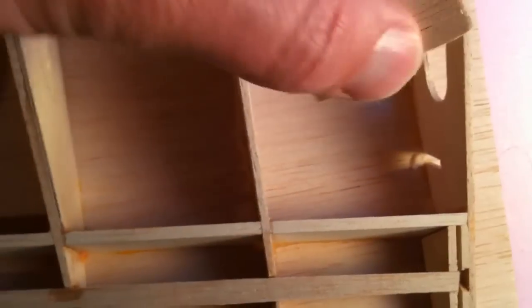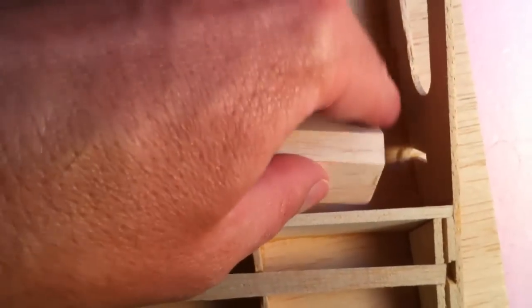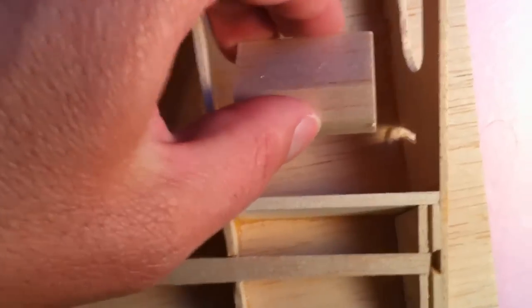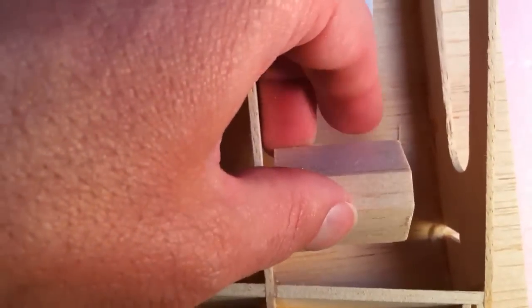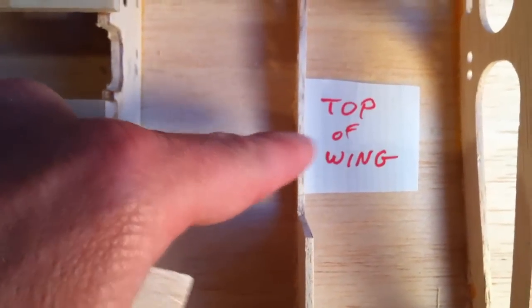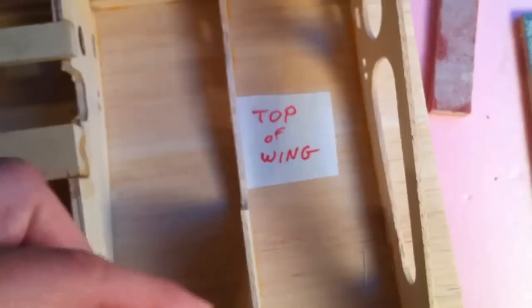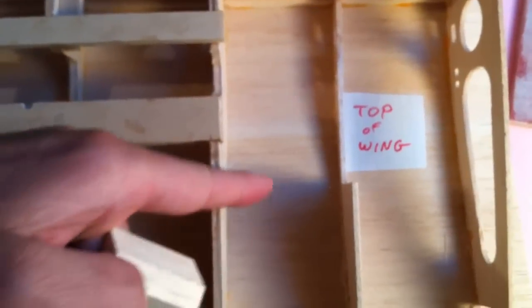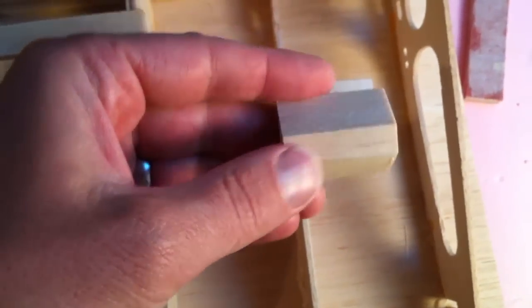This balsa block is going to have to be sanded down to be at the same angle as this surface, so it's going to take a considerable amount. But the reason I'm showing this and the reason you see this top of wing piece of paper here on the wing itself is because sometimes you want to remind yourself which surface you're working on.